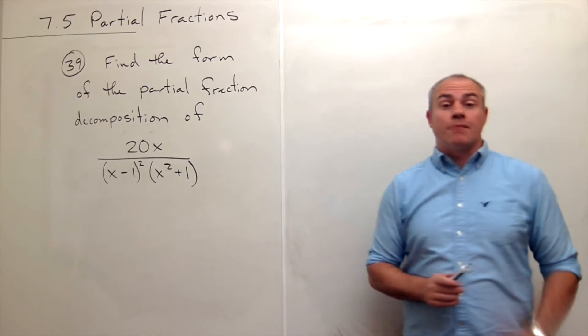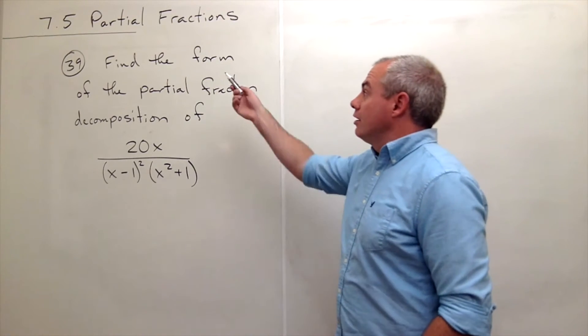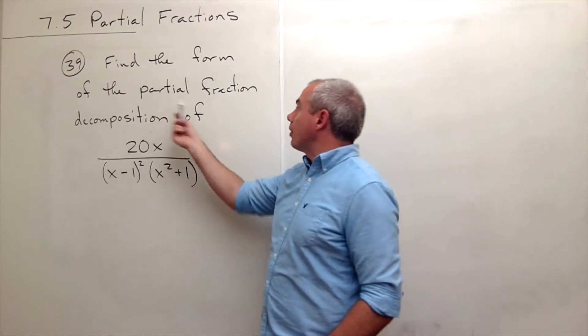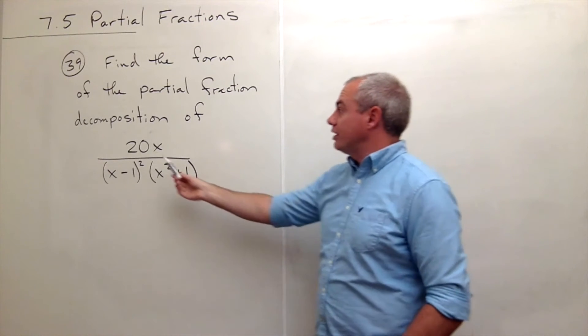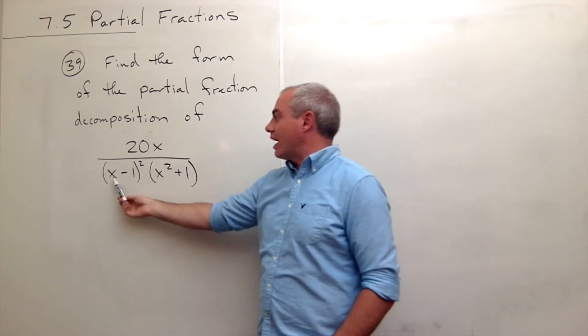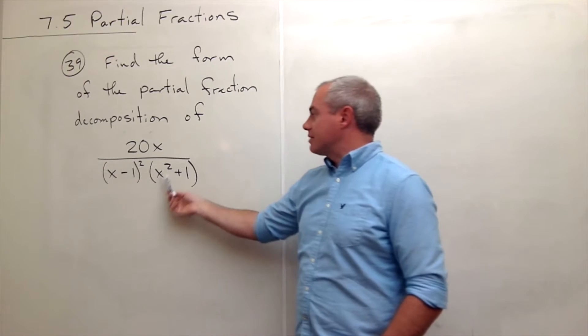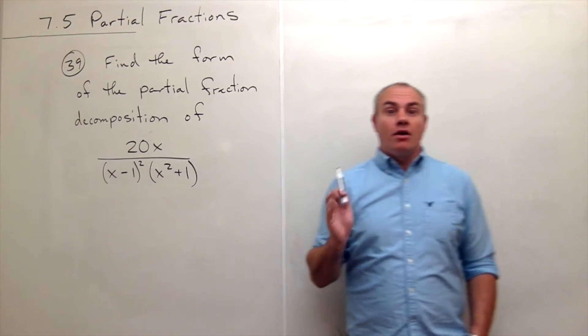I'm the calculus professor, and today I'll be talking to you about partial fractions. In problem number 39, we'd like to find the form of the partial fraction decomposition of this function, which is 20x over (x-1)² times (x²+1).